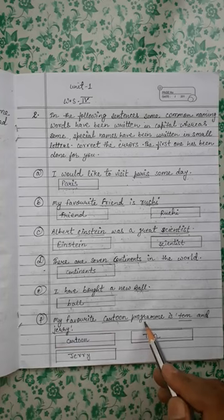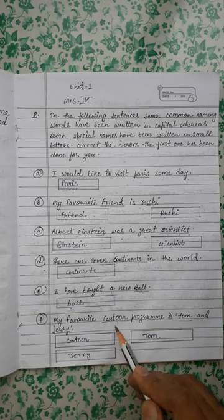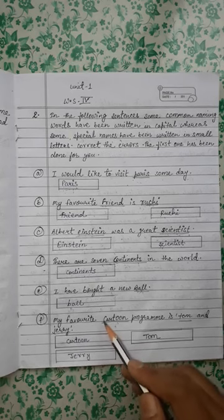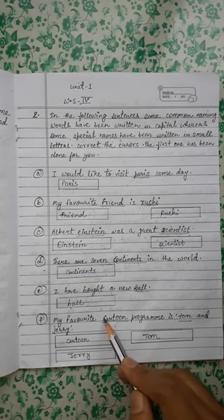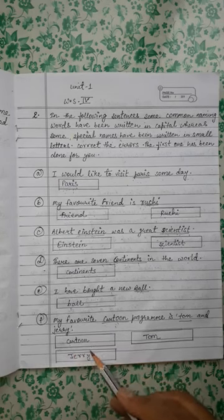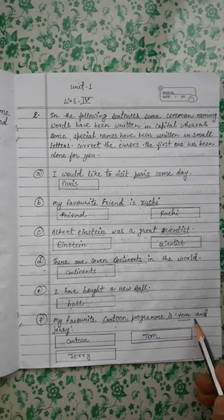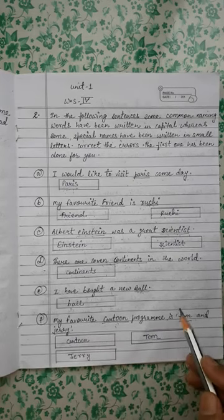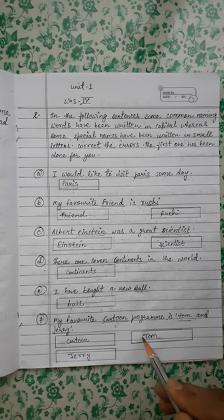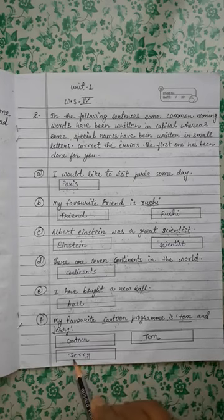Next: 'My favorite cartoon program is Tom and Jerry.' Cartoon is a common noun — there are many cartoons. But the 'C' in cartoon is capital in your book, so you have to make a correction: small 'c' — c, a, r, t, o, o, n. Then, a specific cartoon's name is given — Tom and Jerry. Tom and Jerry are special names, so we have to write them with capital letters: the first letter of Tom is capital and the first letter of Jerry is also capital. Here we completed question number 2.